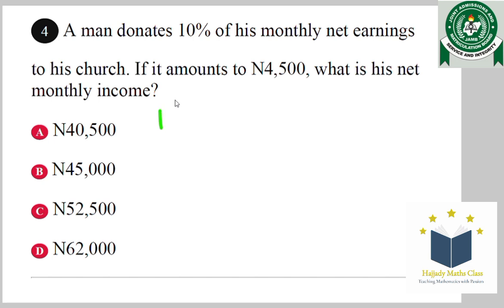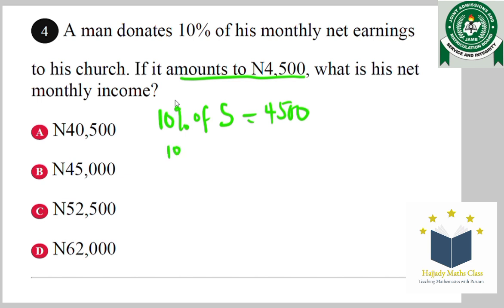This shows that the man donates 10% of the monthly earning. Let's call the earning salary, which is S. It amounts to 4,500. So this is the same thing as saying 10 over 100 multiplied by S equals 4,500.